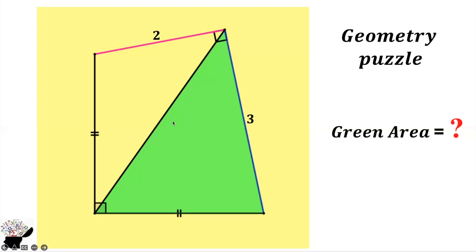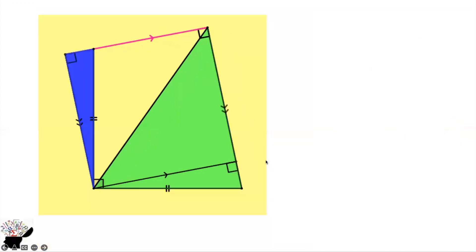This length should be parallel to this one if we want to have a square. This length is parallel to this side, and this angle is 90°, so it automatically makes this side 90°, and this side also 90°.